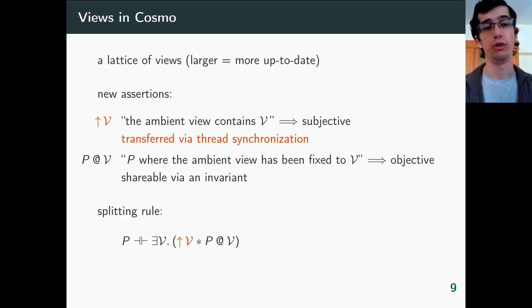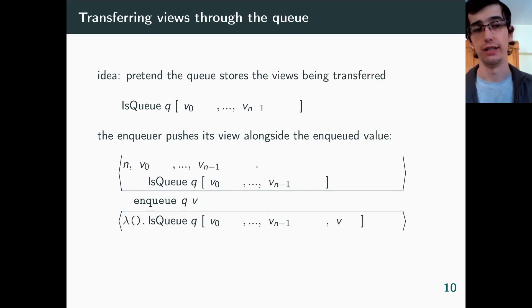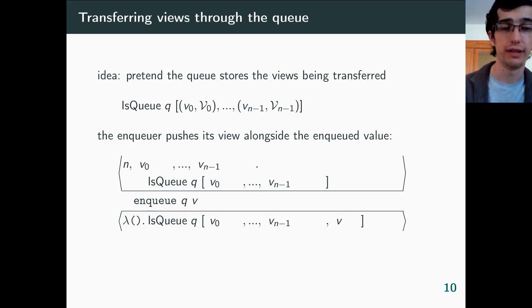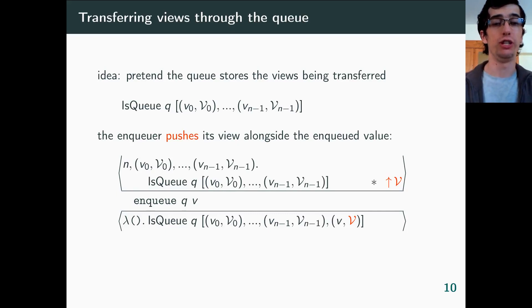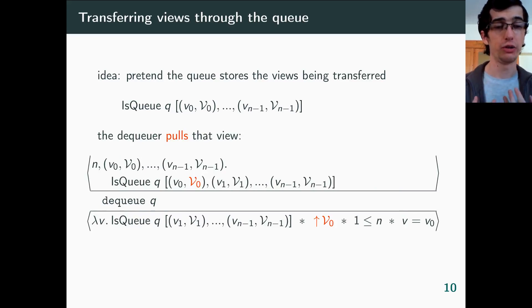Back to our queue again, we want to say that for each item, there is a synchronization, that is a view transfer, from the enqueuer to the dequeuer. The idea is to pretend that the queue stores the views being transferred, so there is now one view for each item, and the representation predicate now looks like this. If we recall the previous spec, it is now augmented with views, and the view transfer happens like that. The enqueuer pushes its current view into the queue, alongside the enqueued item. So in the pre, we use an assertion upper row V for capturing the current view, or in fact, any portion of it as chosen by the user of the spec. And conversely, the dequeuer pulls the view that comes with the item. So it gets that same upper row V, which means that now its current view includes V. So it really is a release-acquire pattern.